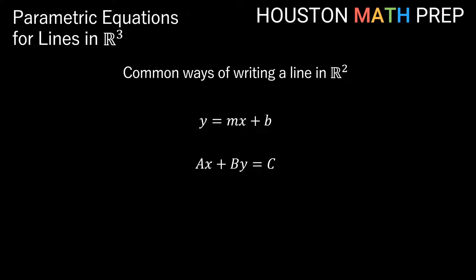Welcome back everyone, Houston Math Prep here. We're going to show you some easy ways of thinking about parametric equations of lines in 3D space. If you remember the most common ways of writing the equation for a line in 2D space, we're probably well acquainted with y equals mx plus b, the slope-intercept form.